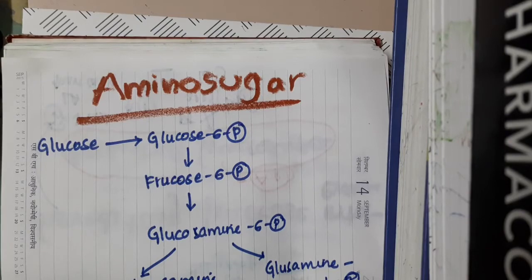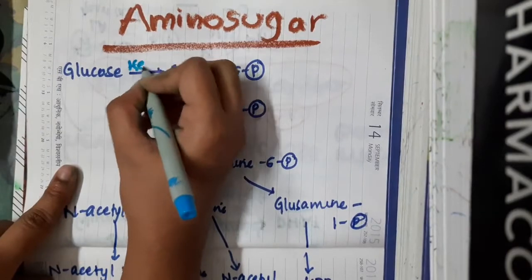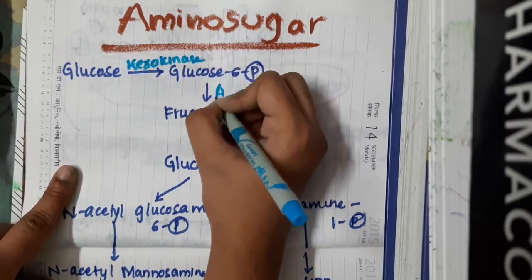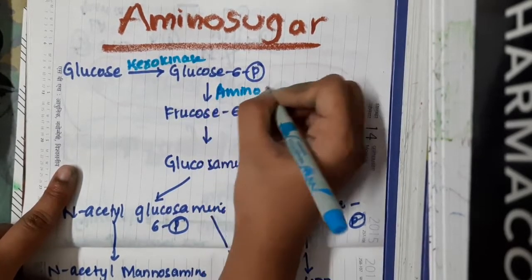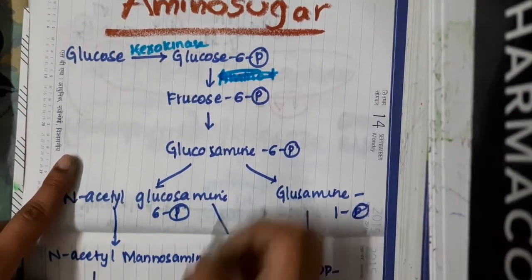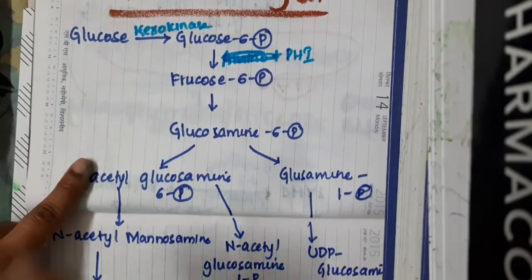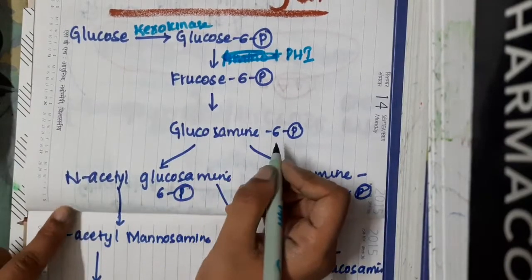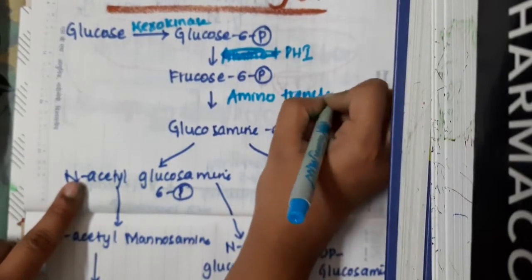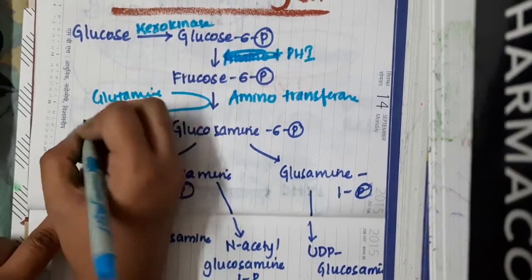Let us review the enzymes in this pathway. Glucose to glucose-6-phosphate: the enzyme is hexokinase. Glucose-6-phosphate to fructose-6-phosphate: phosphohexose isomerase is involved. Fructose-6-phosphate to glucosamine-6-phosphate: the enzyme is aminotransferase, and during this process glutamine gets converted to glutamate.